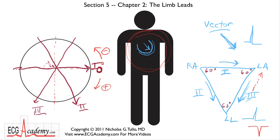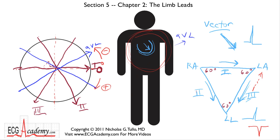Now what about the augmented limb leads? The augmented leads split these 60-degree angles in half. AVL, which is the left arm compared with the sum of the right arm and left leg, points toward the arm itself. AVR is drawn 30 degrees above the horizontal pointing toward the right arm, and AVF goes right down the middle. We've now split this circle into 12 equal parts, each one corresponding with one of the six limb leads we see on a standard ECG.